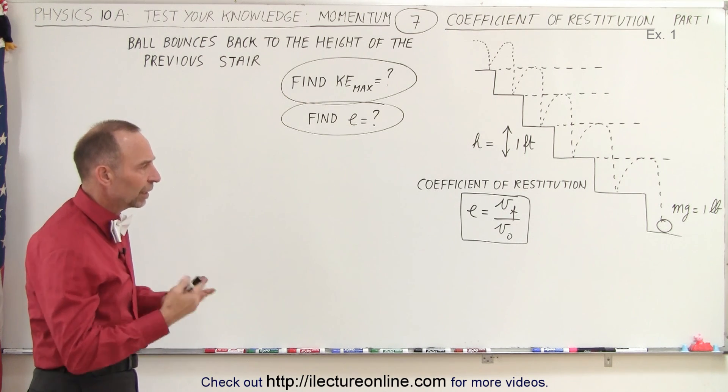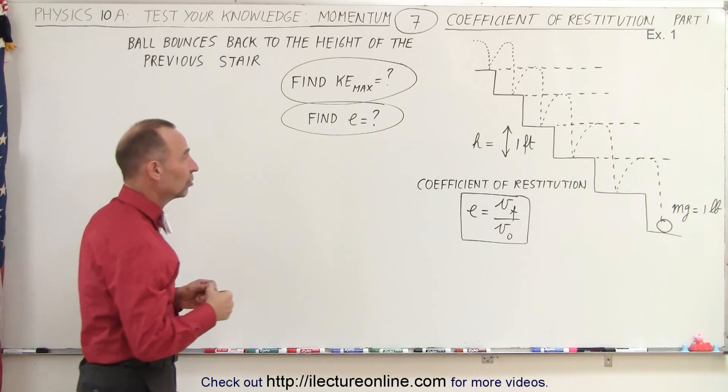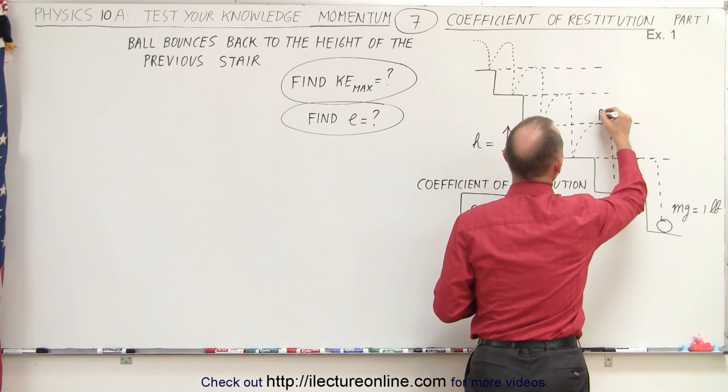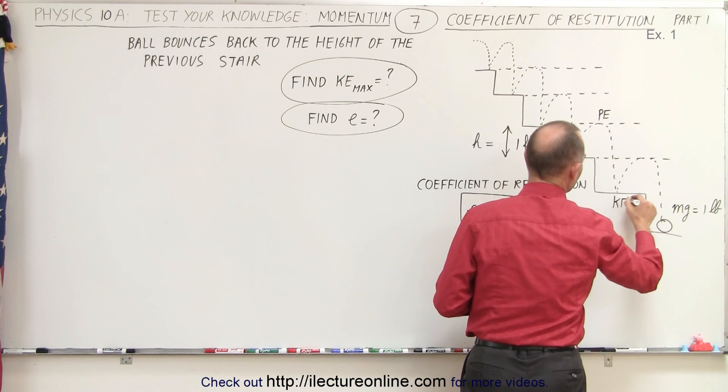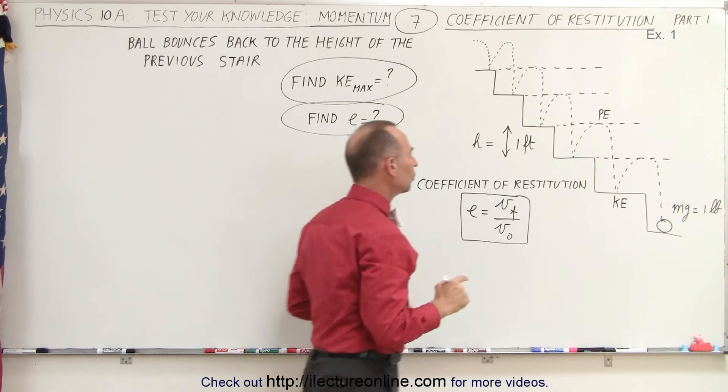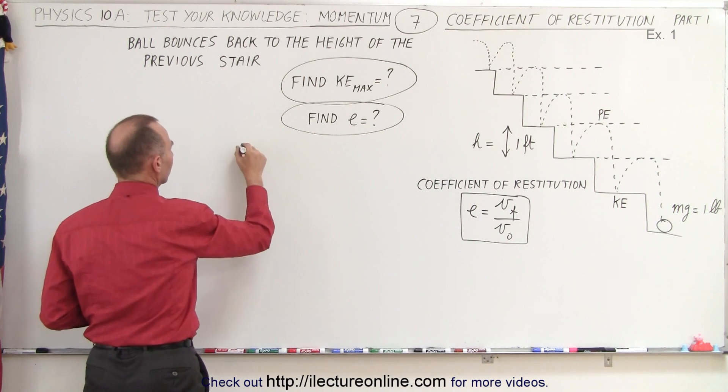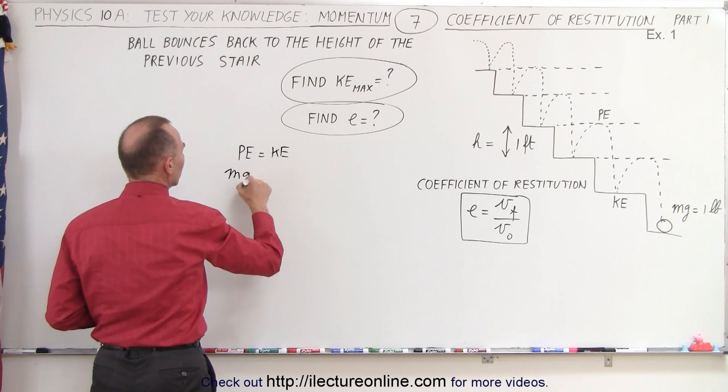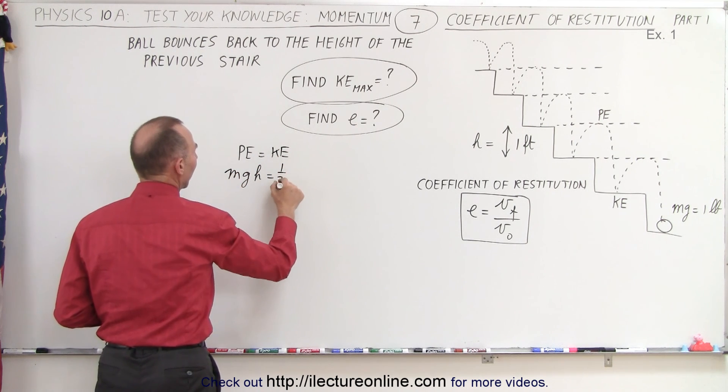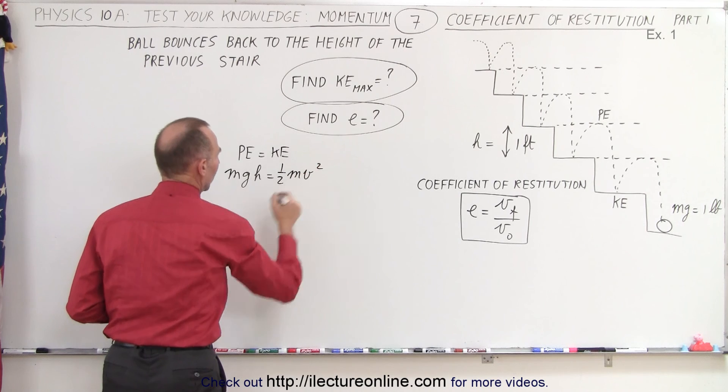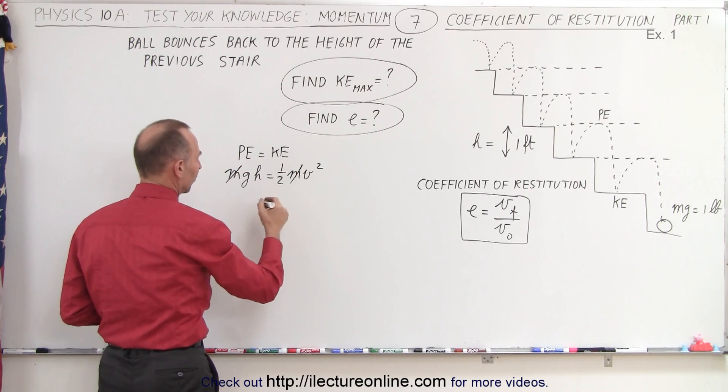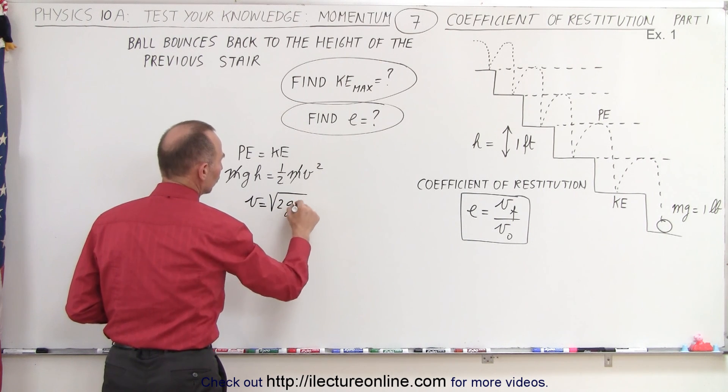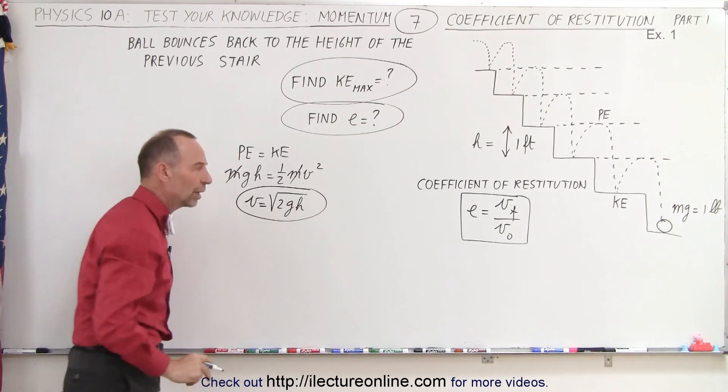You might remember the relationship between the kinetic energy and the potential energy. If we think of that as being the potential energy at the top right here, and then down here, it becomes kinetic energy. If we set those two equal to each other, we can say that the potential energy equals the kinetic energy, or the mgh must equal one half mv squared. When we cancel the m's on both sides and we solve for v, we see that v is equal to the square root of 2gh, which by now should be a familiar equation.